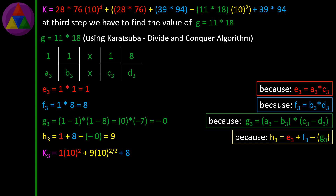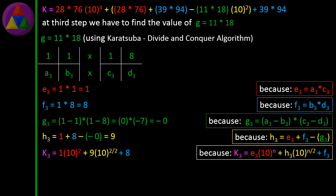K3 = 1×10^2 + 9×10^(2/2) + 8 = 1×100 + 9×10 + 8 = 100 + 90 + 8 = 198, because K3 = E3×10^N + H3×10^(N/2) + F3.